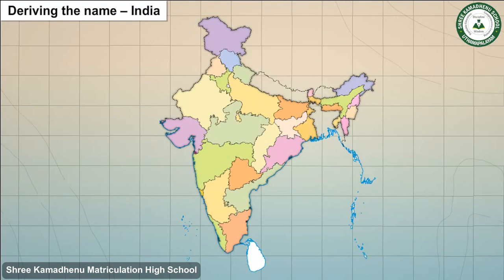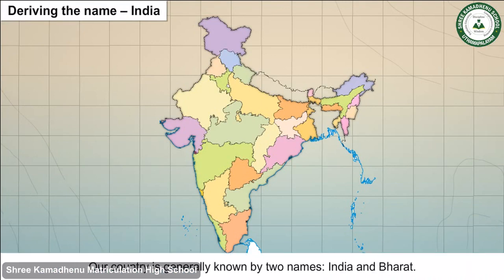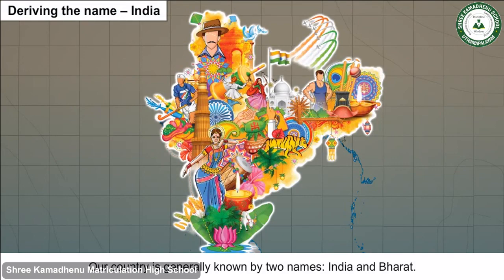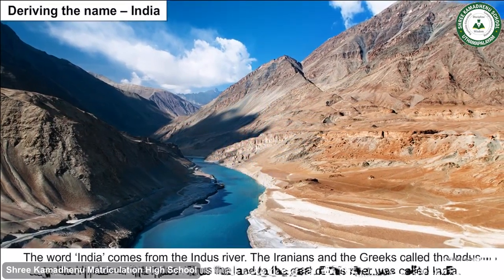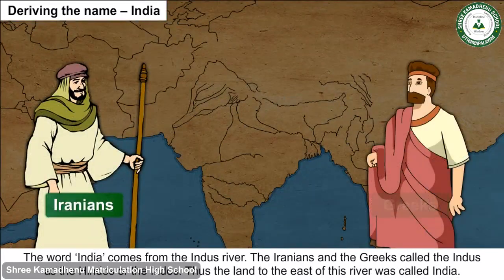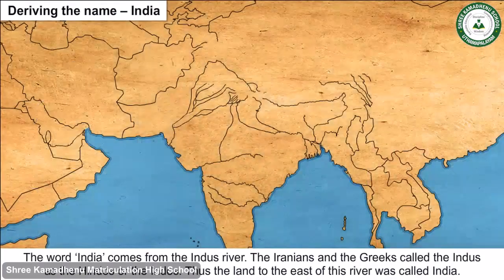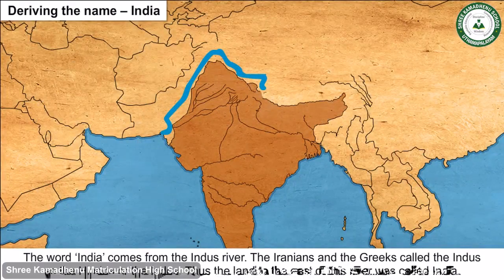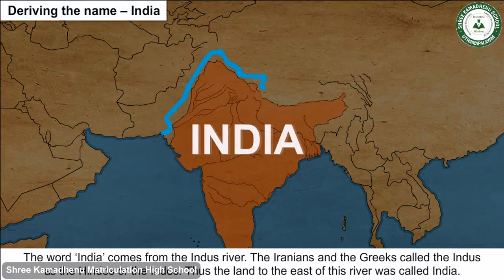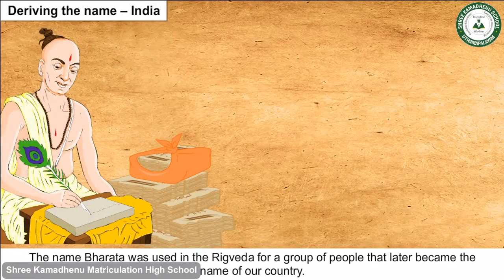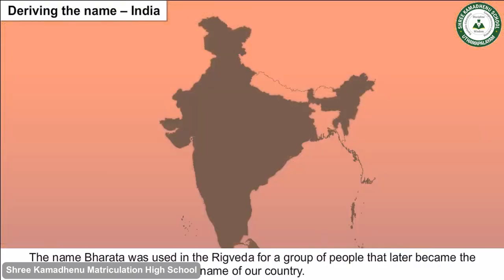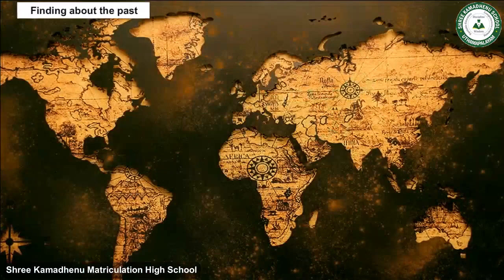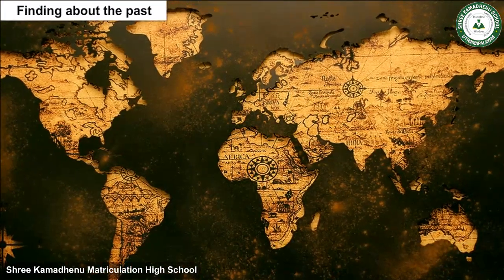Deriving the name India: Our country is generally known by two names — India and Bharat. The word India comes from the Indus River. The Iranians and the Greeks called the Indus as the Hindus or the Indos. Thus, the land to the east of this river was called India. The name Bharat was used in the Rig Veda for a group of people that later became the name of our country.